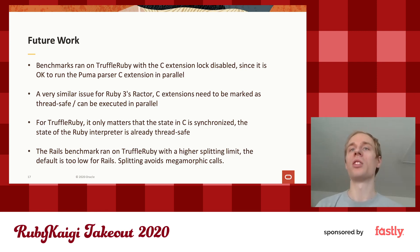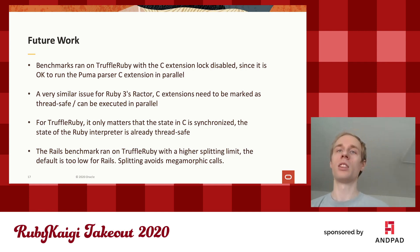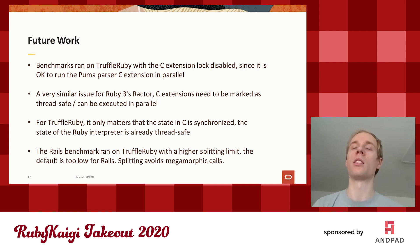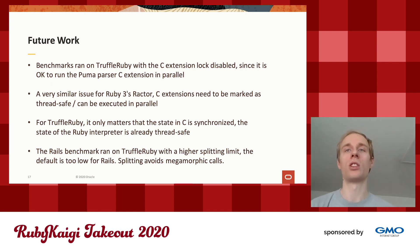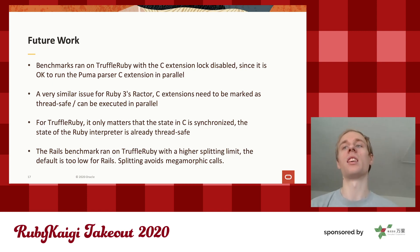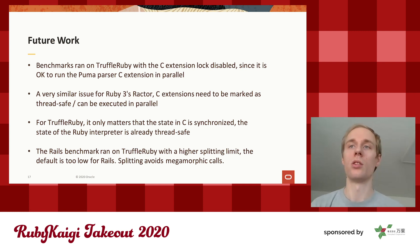The question of whether a C extension can run in parallel — whether it needs a global lock — is something that will also come up for Ruby 3's Ractor project by Koichi. For C extensions to work across multiple Ractors, they'll need to be marked as thread-safe for parallel execution. TruffleRuby needs essentially the same thing: does the extension have its own synchronization for its C-level state? TruffleRuby is actually less restrictive than Ractor — for instance, you can pass objects between threads in TruffleRuby, whereas Ractor restricts non-shareable objects. The key question is just whether global variables in C are properly synchronized. This is something we want to work on to make it easier to mark C extensions as safe for parallel execution.